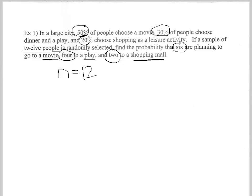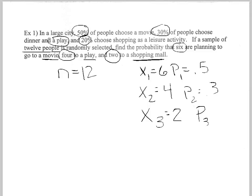So the probability of people that go to the movie is 0.5, and we want six people to go. We want four people to go to the play, and the probability of the play is thirty percent, 0.3. And then the last one, the mall, we want two people to go there, and that probability is 0.2.